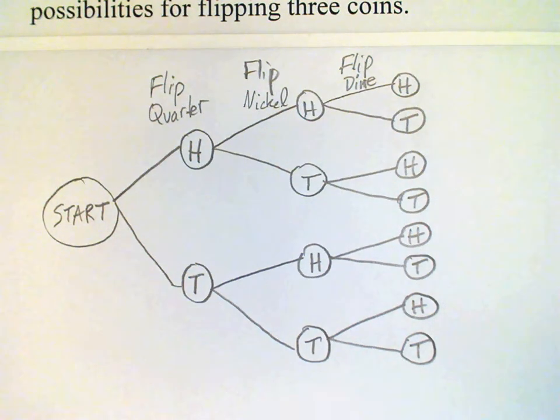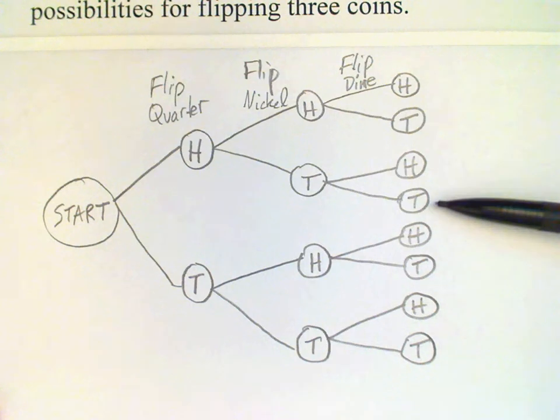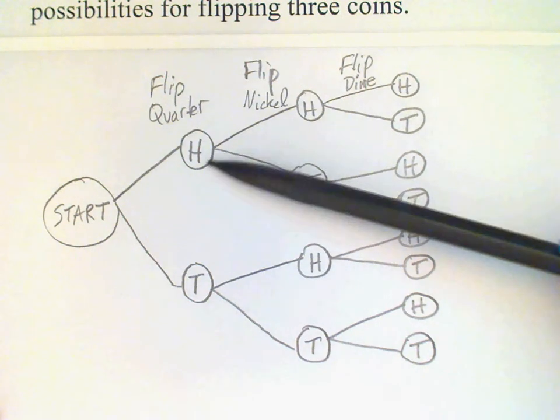And we can see for each twig, each twig will give us the result for each coin. For example, at this twig here, we look back and we see dime as a tail, nickel as a tail, quarter as a head.